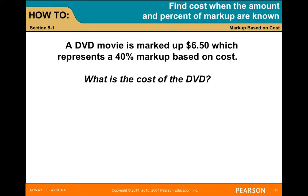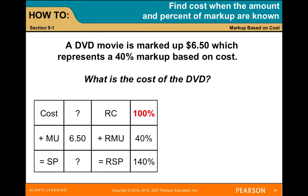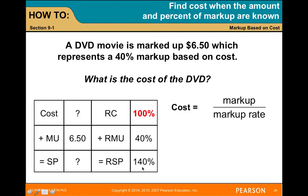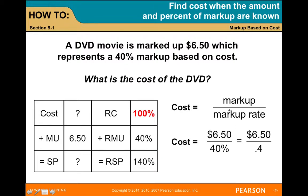A DVD movie is marked up $6.50, which represents a 40% markup based on cost. What is the cost of the DVD? Here we have the given information: cost is unknown at 100%, markup is $6.50 at 40%, and we're trying to figure out the selling price at 140%. Cost equals markup divided by the markup rate. So cost equals $6.50 divided by 0.40, which equals $16.25.